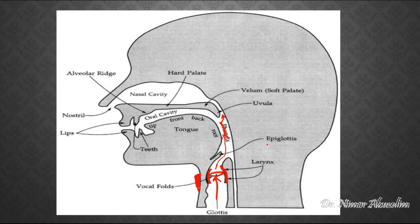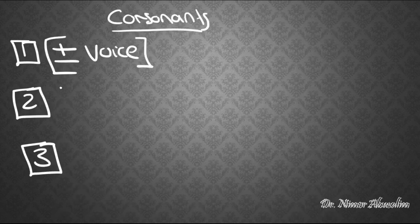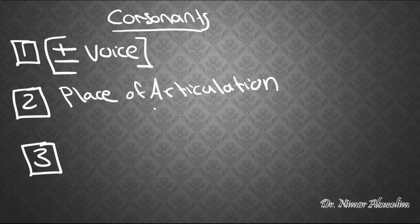Sounds modified at the epiglottis are called glottal sounds. Sounds modified at the velum or soft palate are called velar sounds. Notice that we're talking about locations — places. Recall that when we talked about voiced and voiceless sounds, the difference was not in location but in whether there was vibration or not. Whether there's vibration or not is one way to distinguish sounds. Whether they happen in one place or another is a second way, which we refer to as place of articulation.